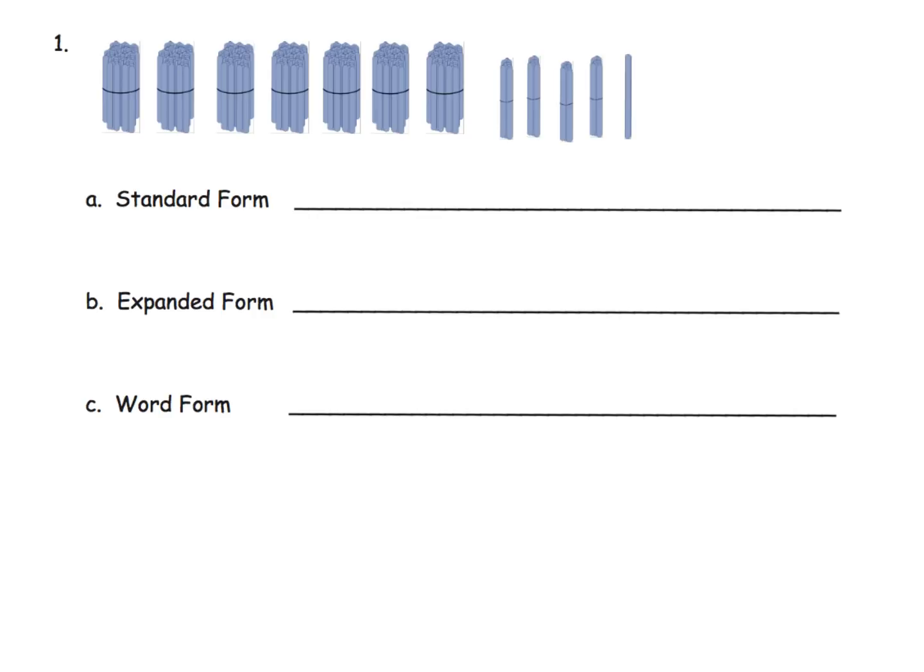For example, we have 100, 200, 300, 400, 500, 600, 700. So we have seven bundles of hundreds, so we have seven hundreds.